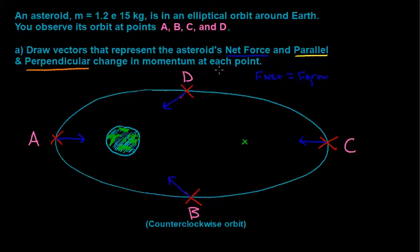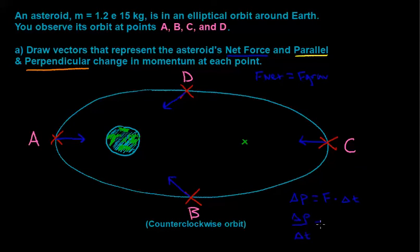When we talk about the change in momentum at each of these points, we're working from the equation that the change in momentum is equal to force times the change in time. So really, we're just drawing more force vectors in the parallel and perpendicular sense of following the motion of this asteroid.